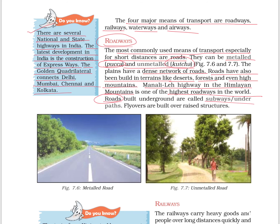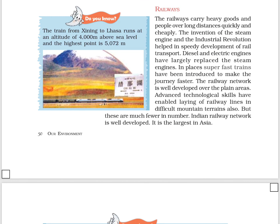Roads built underground are called subways or underpaths. Flyovers are also built over raised structures. Railways carry heavy goods and people over long distances quickly and cheaply.